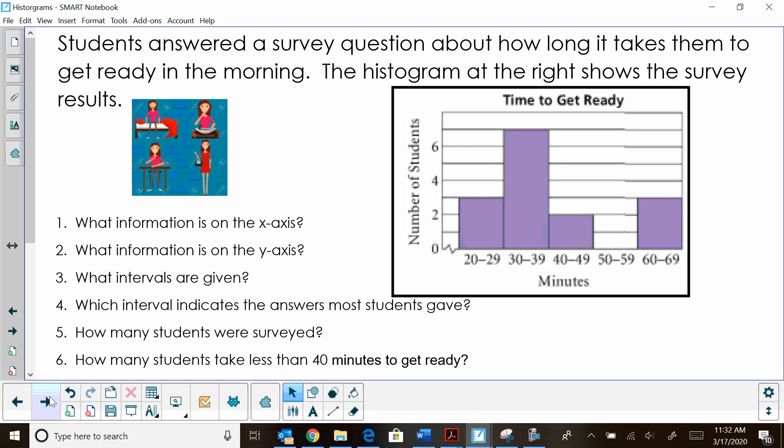Now here is our first question or set of questions. Students answered a survey question about how long it takes them to get ready in the morning. The histogram at the right shows the survey results. So let's look at the questions and use our histogram to answer those. What information is on the x-axis? So let's look along this x-axis. Well, what information are the minutes that it takes a student to get ready?